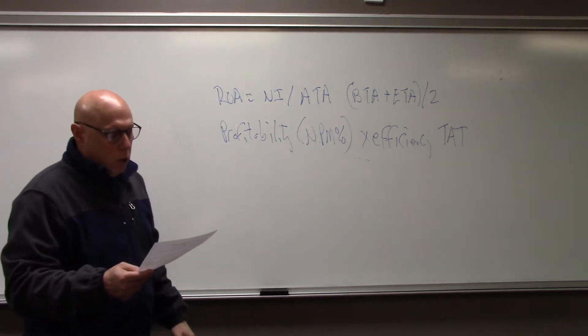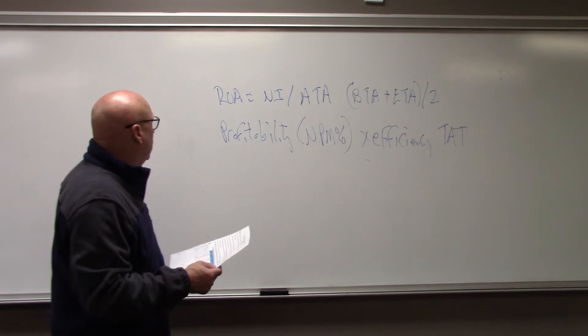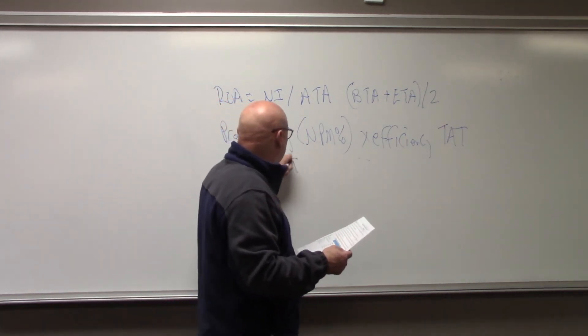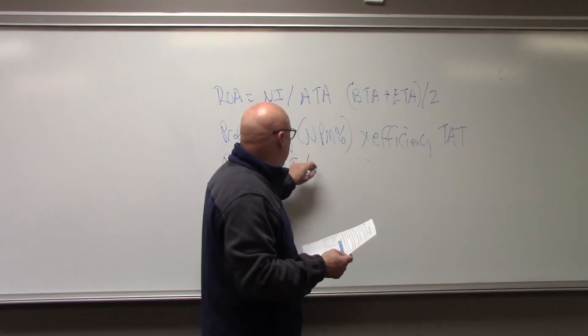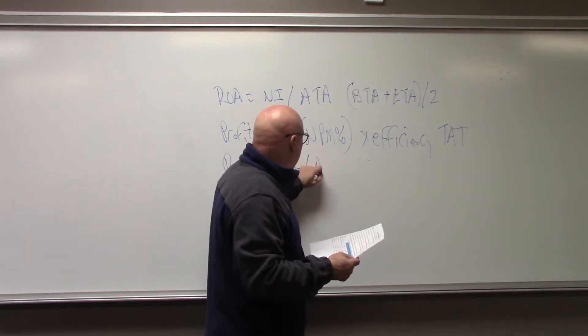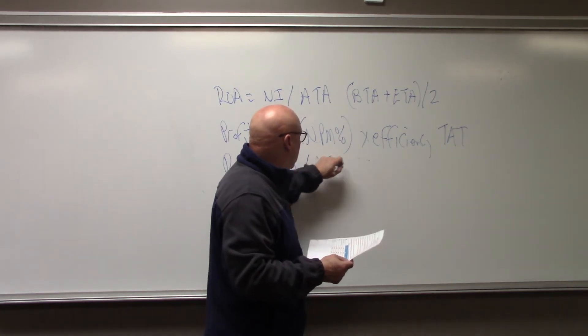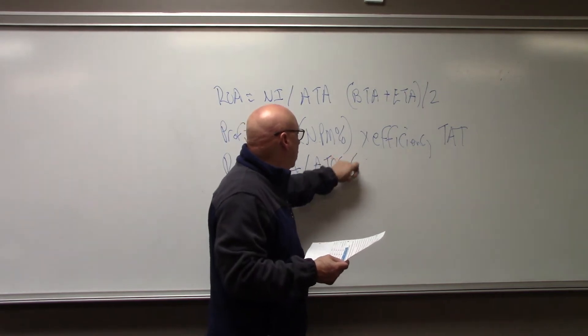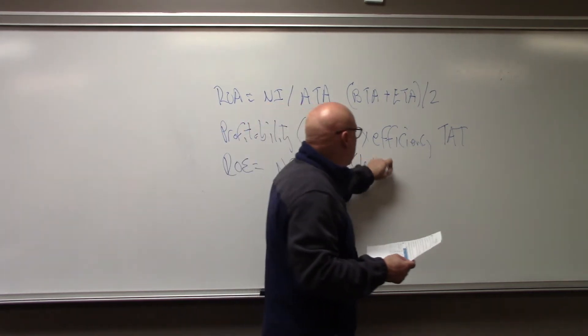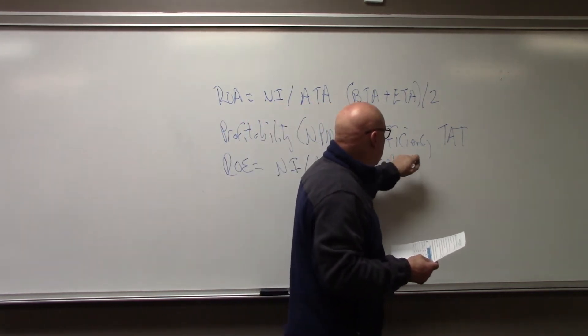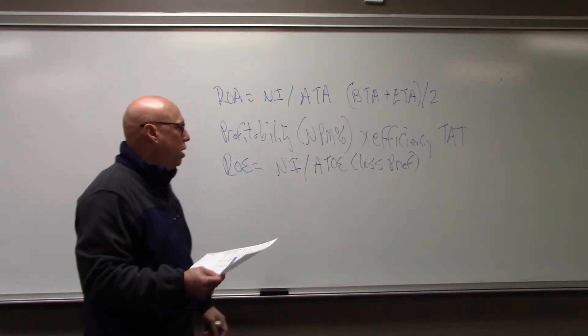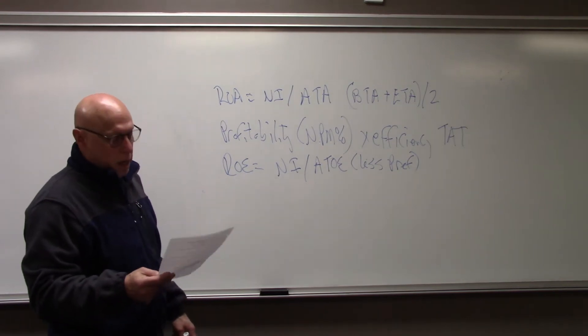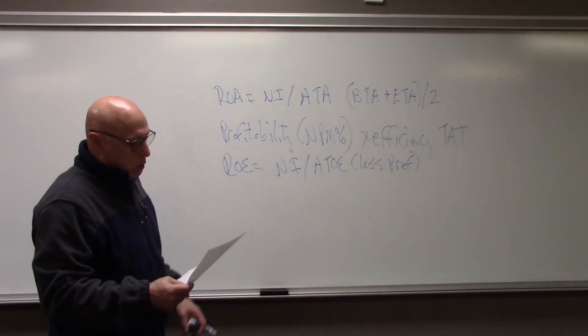What is the short formula for return on equity? The short formula is net income divided by average total owner's equity, and that is usually less preferred equity. Typically, you will subtract out preferred stock. Sometimes it's called return on common equity.